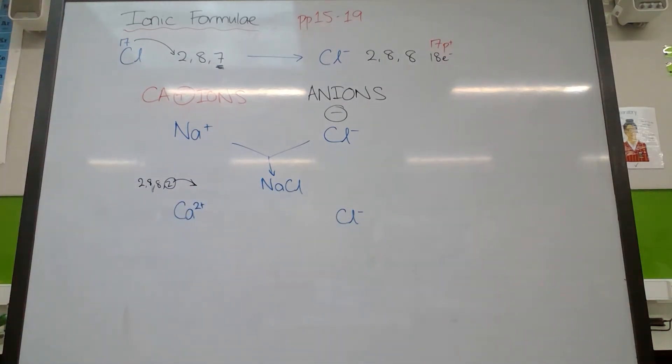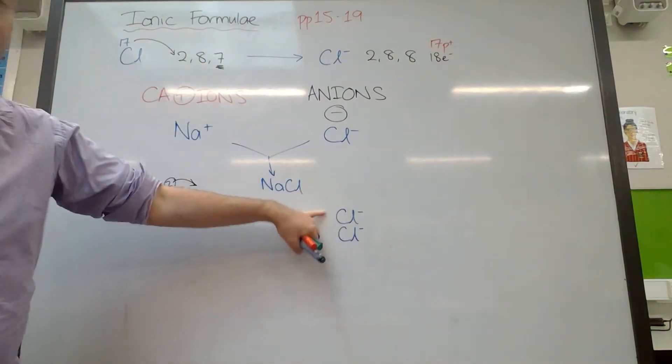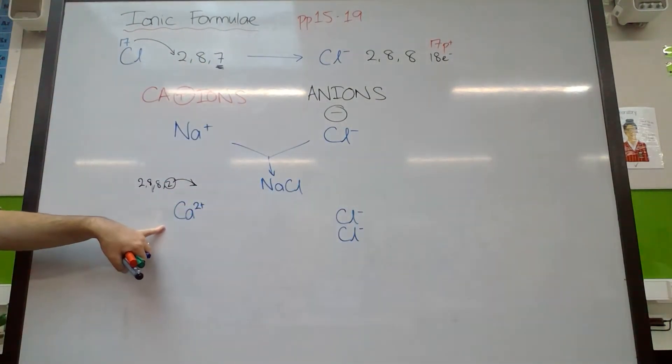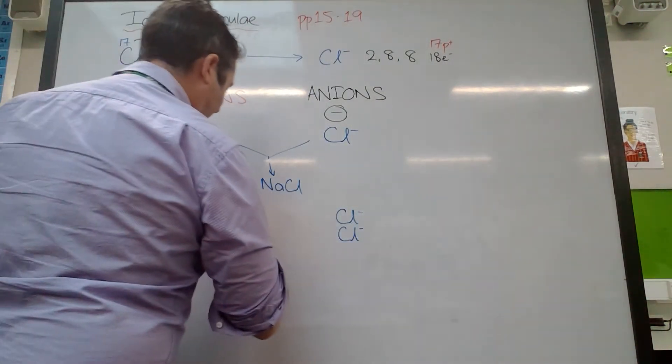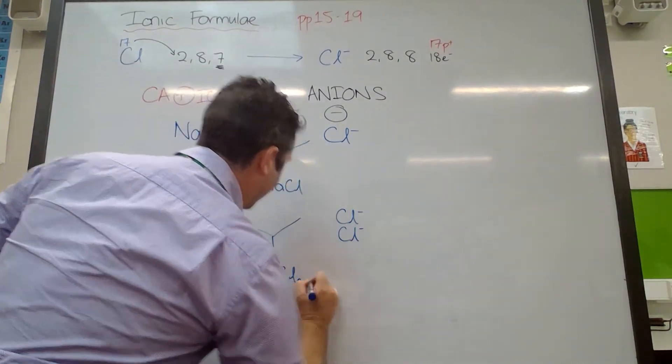But chloride is only one minus. So calcium ions will attract chloride ions, but to make the compound, to make the ionic compound, we need another chloride ion to balance out the two. We need two chloride. Now we've got two minuses and two positives. When they join together, we write that as CaCl2.